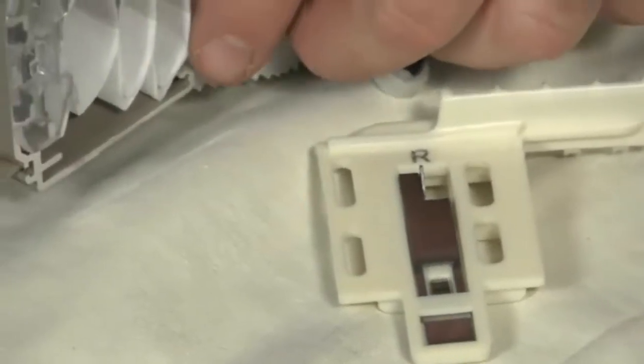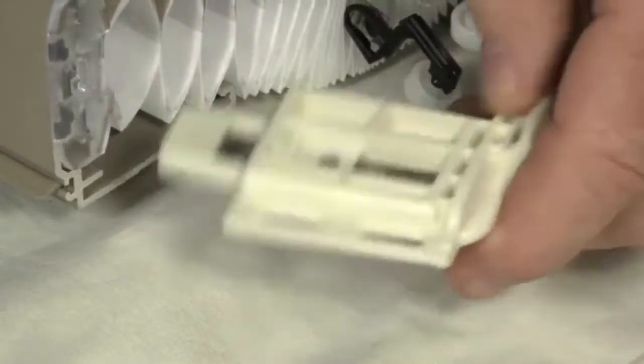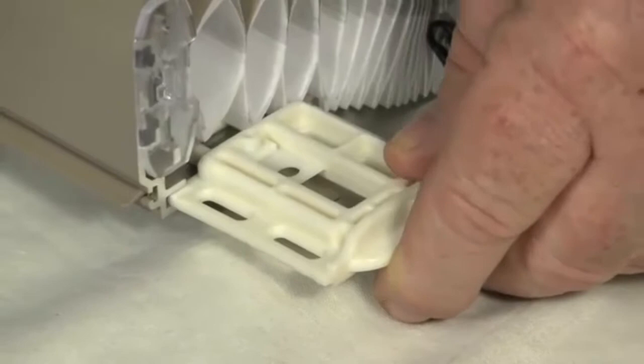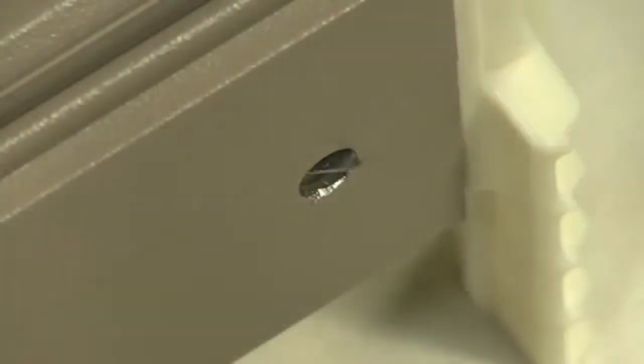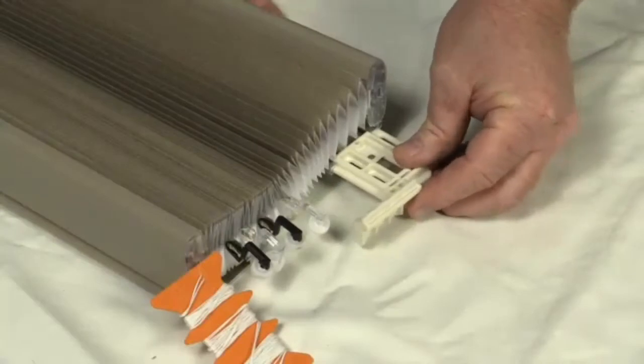Insert a stationary rail bracket into the two grooves at the top rear of the stationary rail and slide down into position. Check that the bracket's catch is fully engaged.